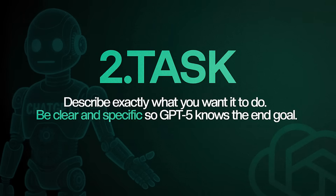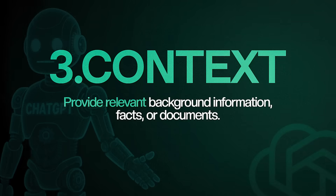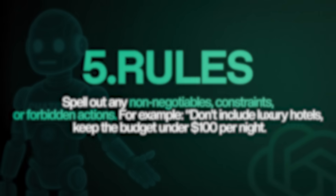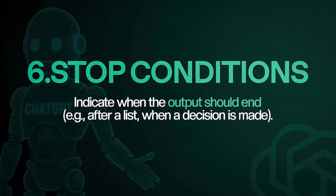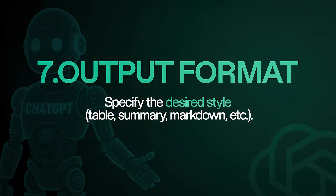So: role, task, context, reasoning, rules, stop condition, and the output format. This is the ideal prompt structure if you want the best out of GPT-5. Let me explain with a couple of examples.